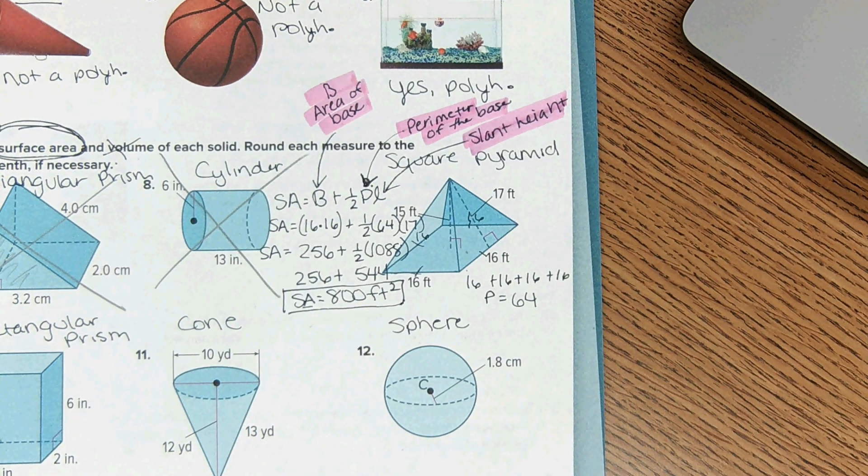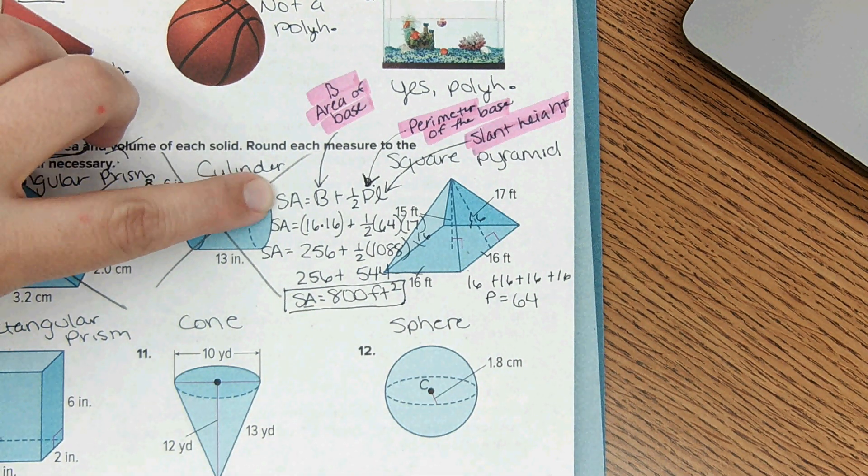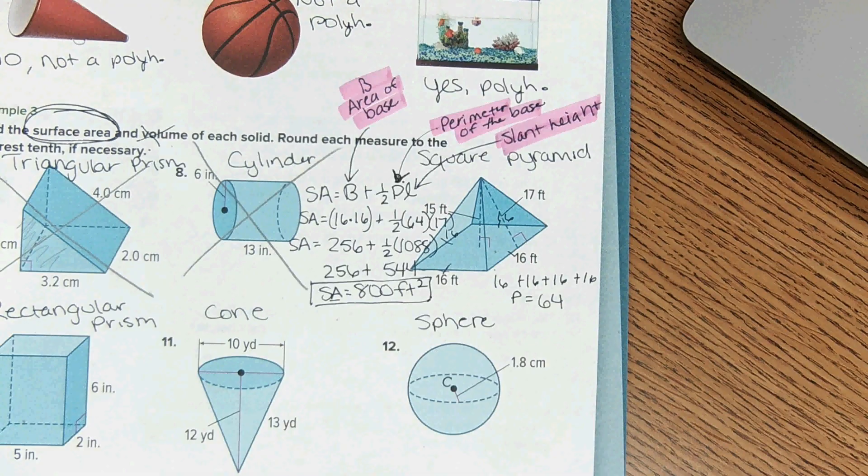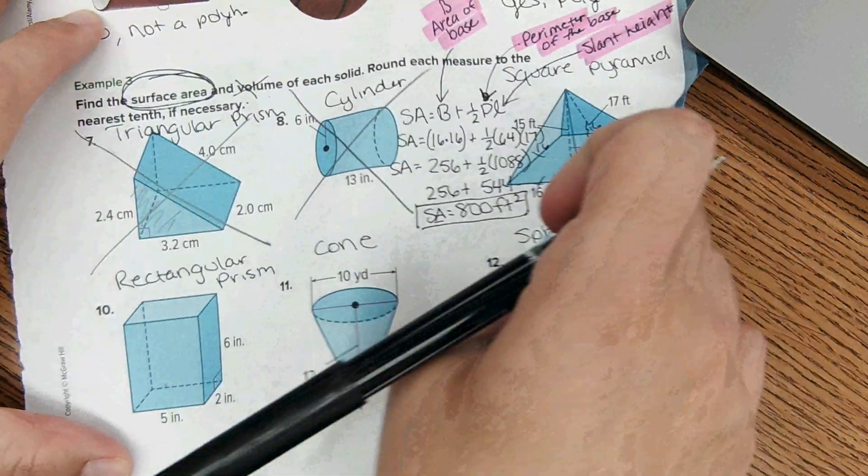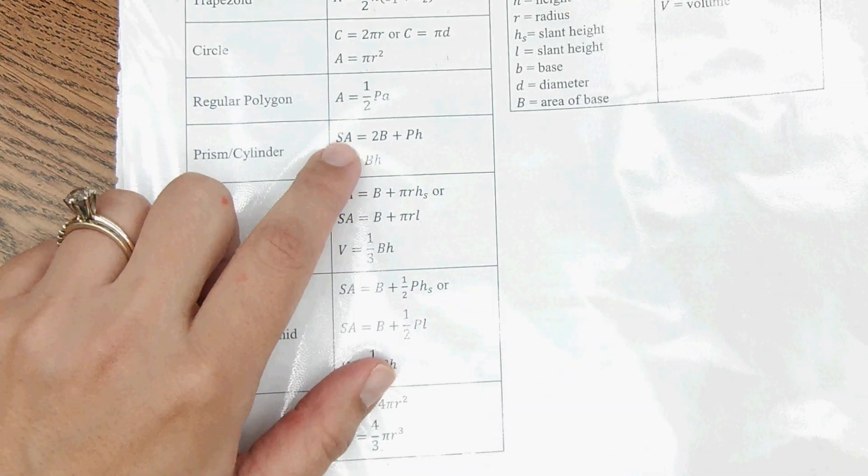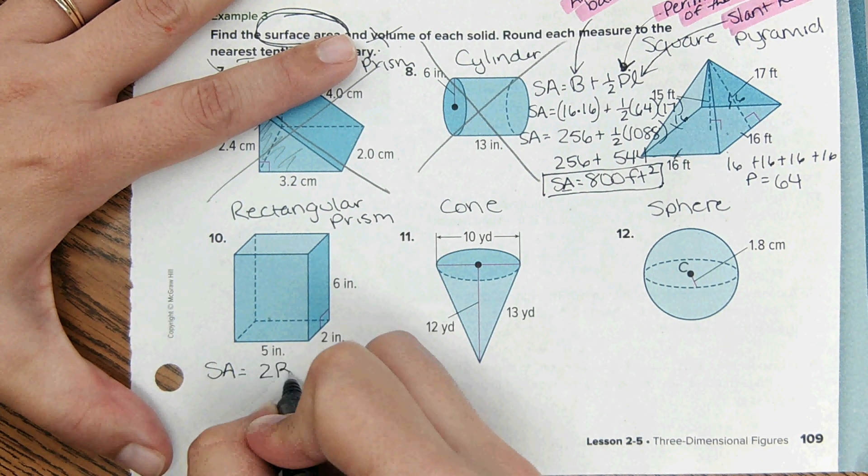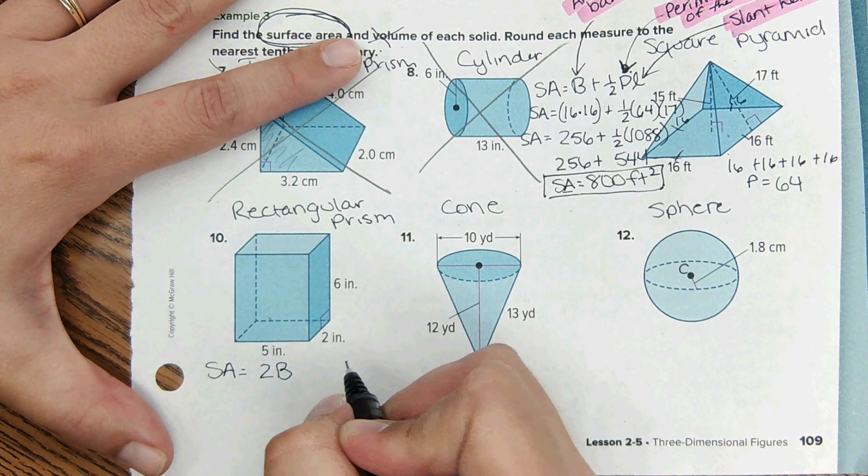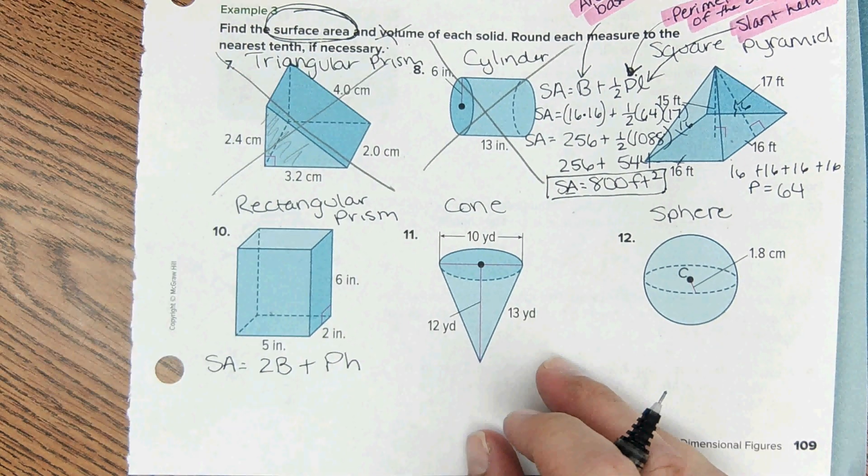Okay, so every equation is a slight variation of this but that's the gist. So next one, rectangular prism. Again, looking at the reference sheet - prism right here - and then it says surface area is this. So I'm going to write down that equation: SA equals 2 times area of the base plus P times H.